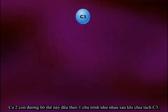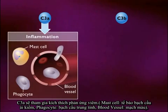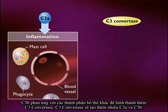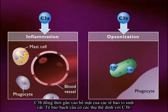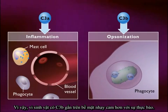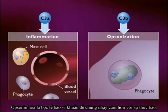Both pathways of complement activation follow the same sequence after cleavage of C3. C3A is involved in stimulating inflammation. C3B reacts with other complement components to form C3-convertase, which forms more C3A and C3B. C3B also attaches to the surfaces of microorganisms. Phagocytes have a binding site for C3B, so microorganisms with C3B bound to their surfaces are more susceptible to phagocytosis. Coating of bacteria to make them more susceptible to phagocytosis is called opsonization.